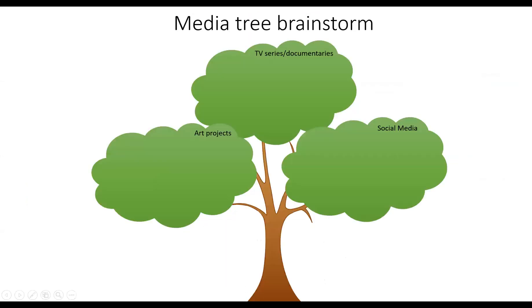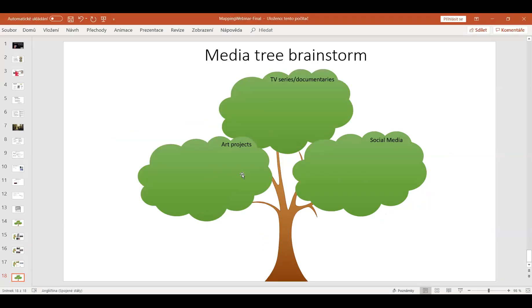As a last part of our presentation, we'd like to pick your brains and have a bit of a brainstorm. We have these three areas: art projects, TV series and documentaries, and social media. We're mainly looking at the past year. If anyone can think of an art project or exhibition they've seen in the past year, you could put it in the chat — maybe do a quick Google if you can't quite remember the name.